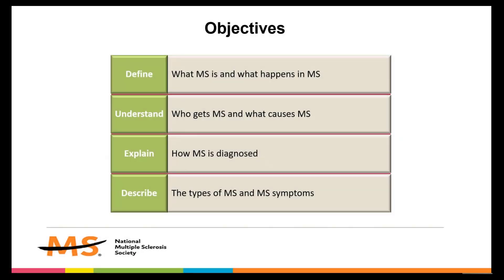In this module, I'll provide an overview of multiple sclerosis, define what MS is, and what happens in MS. By the end of this module, you'll have a better understanding of who gets MS and what causes MS. We will also explain how MS is diagnosed and describe the types of MS and the many MS symptoms. This module lays the foundation for our later discussion on MS and exercise and physical activity. You will see a list of additional resources below this video, including links to information on our website that expands on these topics. We encourage you to review what is provided, as the test at the end of the training will reflect some of this information.